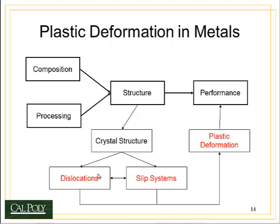You can think of those dislocations as little cars inside the crystal structure, and those cars are moving along highways called slip systems. Together, as the cars move along the highways, we get the phenomenon called plastic deformation. We'll talk about how this is what really happens and how for a long time people thought it happened differently, but that proved to be inaccurate.